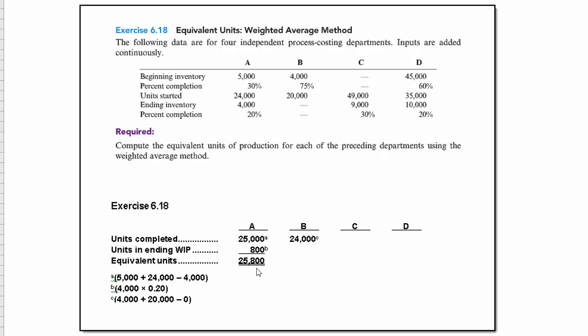Here's a quick hint for Department B. We again need to compute the units completed. We know there was 4,000 in beginning and 20,000 started, nothing in ending.